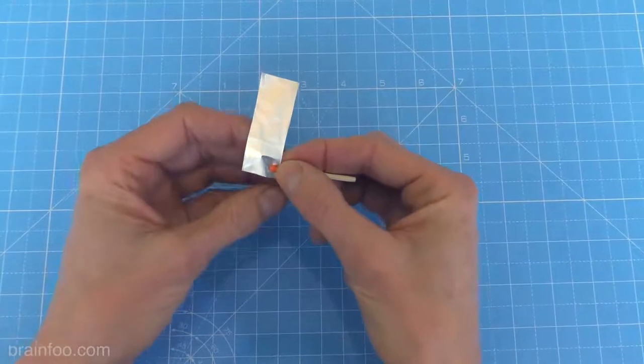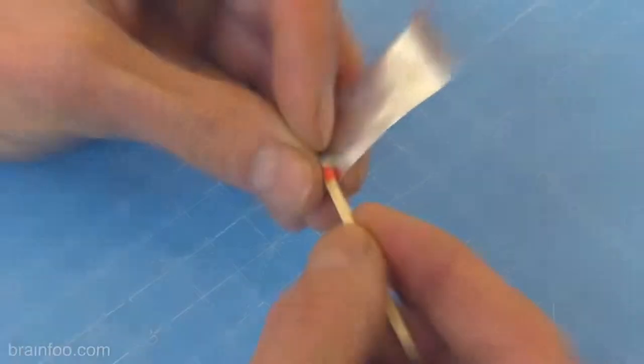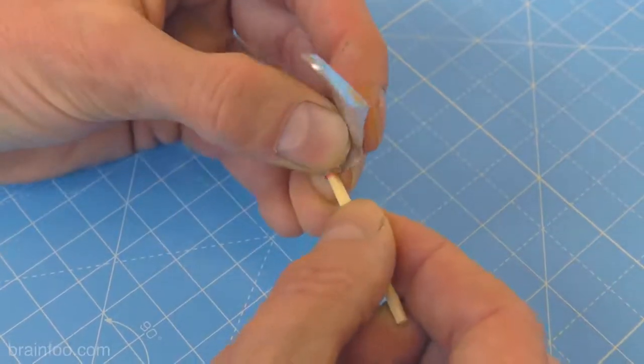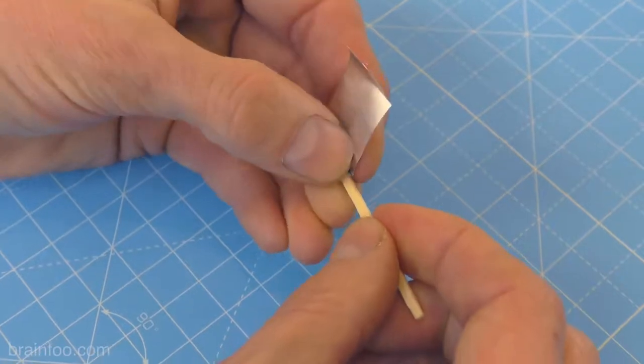Finishing the project could not be easier. Place the match into the aluminum foil like this, so that the foil just covers the coating at the tip of the match.